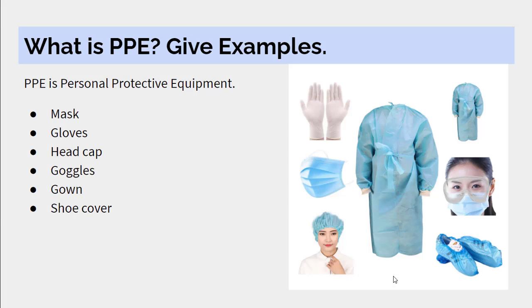What is PPE? Give examples. PPE is Personal Protective Equipment. Examples are mask, gloves, head cap, goggles, gown, and shoe cover.